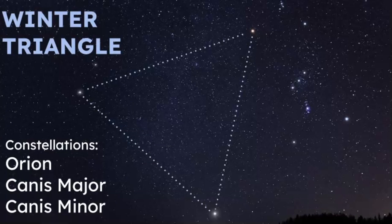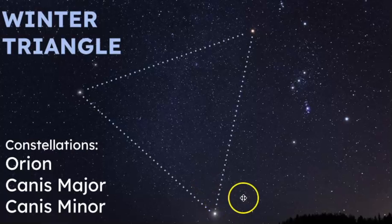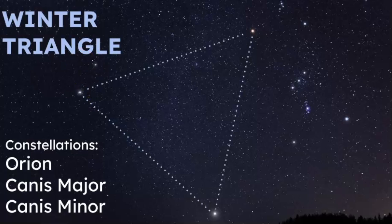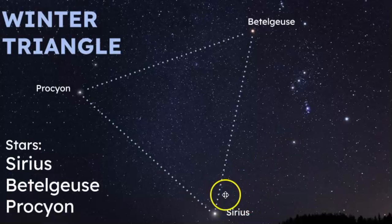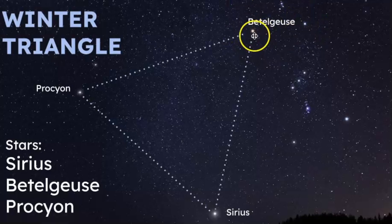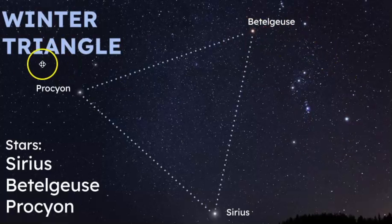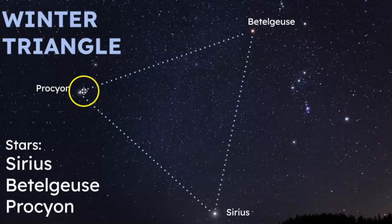The Winter Triangle contains three constellations: Orion, Canis Major, and Canis Minor, which is a simple two-star constellation. The stars that make up the Winter Triangle are Sirius — the brightest star in the night sky — Betelgeuse, the orange star that is the shoulder of the giant Orion, and Procyon, which is the brightest star in the constellation Canis Minor.